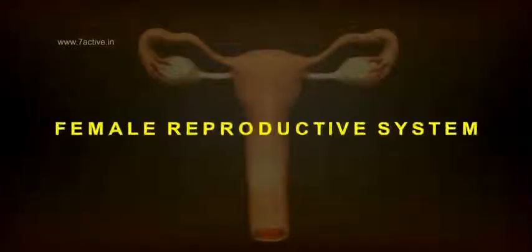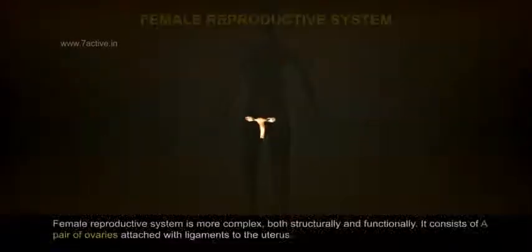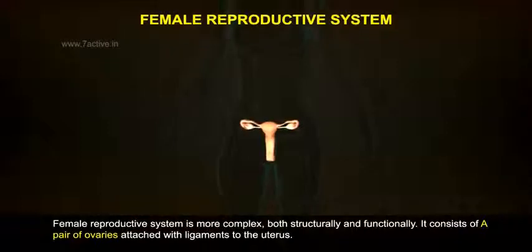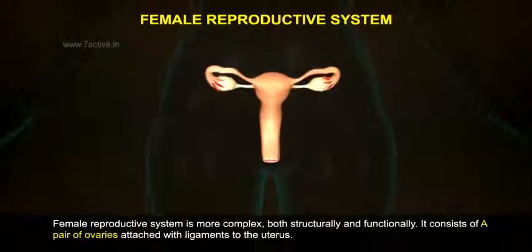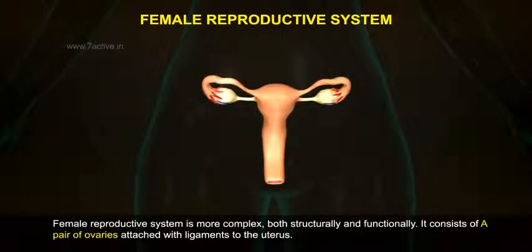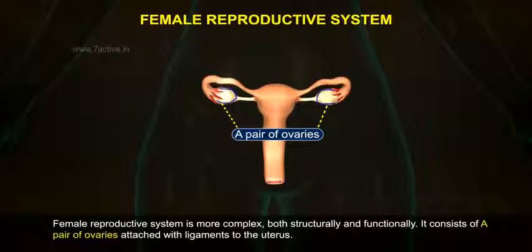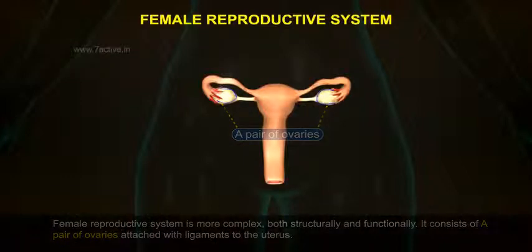The Female Reproductive System is more complex, both structurally and functionally. It consists of a pair of ovaries attached with ligaments to the uterus.